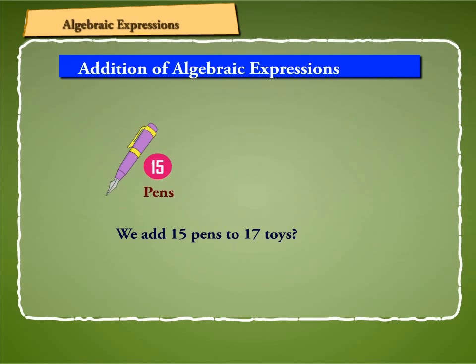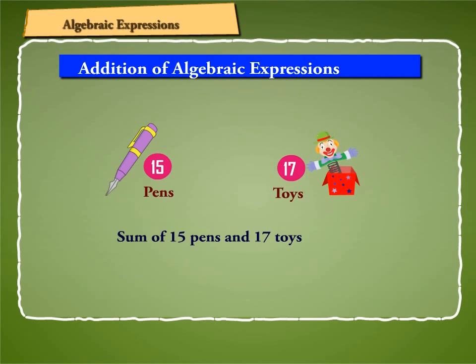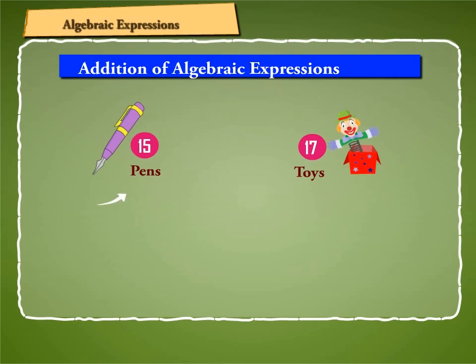But we cannot add 15 pens to 17 toys. We can simply write the sum of 15 pens and 17 toys as 15 pens plus 17 toys. So if x stands for pens and y stands for toys, we can write it as 15x plus 17y.